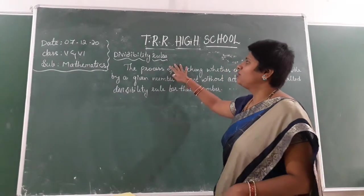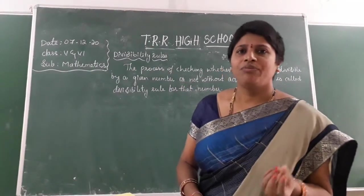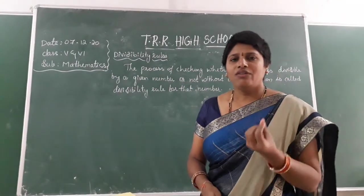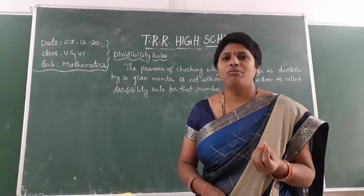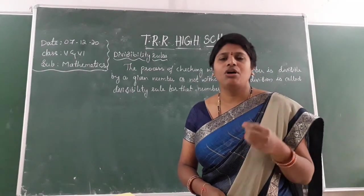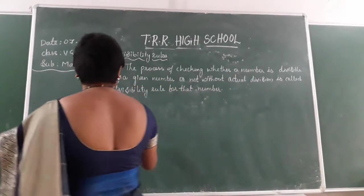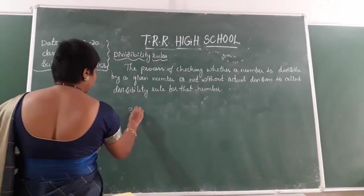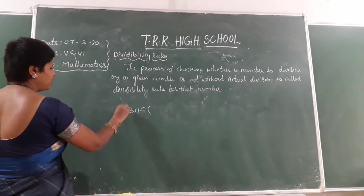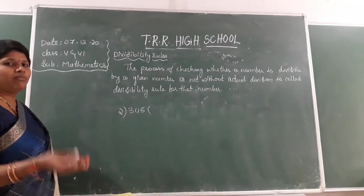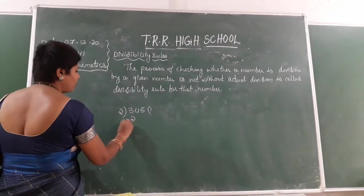So, what are these divisibility rules? Suppose a number is given and I want to check whether that number is divisible by 2, or 3, or 4 — what will I do? Definitely I will go for a division. Suppose 345 is there and I want to divide it by 2. The only method you know is division, so I will go for the division.